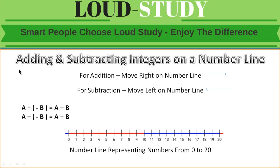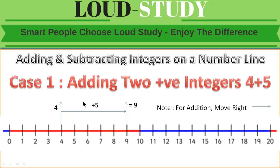Some tips and tricks: for addition, we have to move right on the number line, and for subtraction we have to move left. The arrow denotes the direction — positive or negative. One more rule: if we add a plus minus b, it equals a minus b. And if we subtract a minus minus b, it equals a plus b.